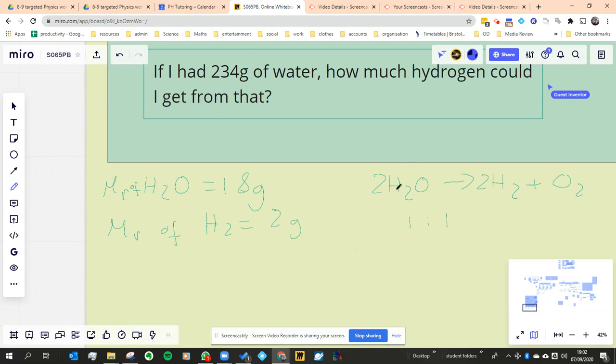I know if I had one mole of water, I'd have one mole of hydrogen. How many moles of water do I actually have? Well, the moles is going to be equal to the mass divided by the molar mass.